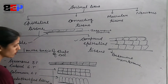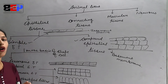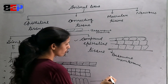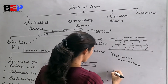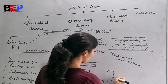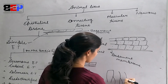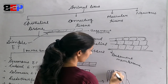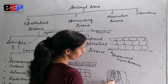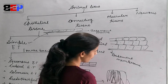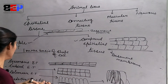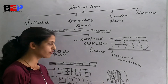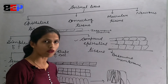Pseudo-stratified epithelial tissue has two types of cells: column-like cells and triangular-shaped cells. The difference between pseudo-stratified and columnar epithelium is that in pseudo-stratified, some cells are column-like and some are triangular-shaped.